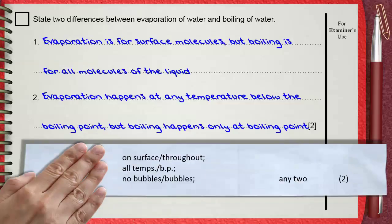The mark scheme gives two marks for any one of: on surface for evaporation but throughout for boiling; all temperatures for evaporation but at boiling point for boiling; no bubbles in evaporation but there are bubbles in boiling.